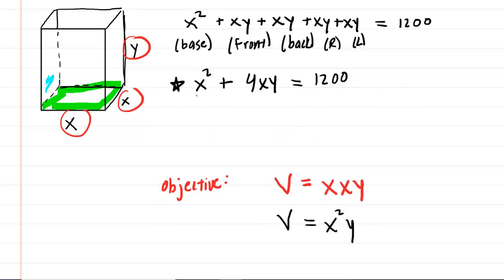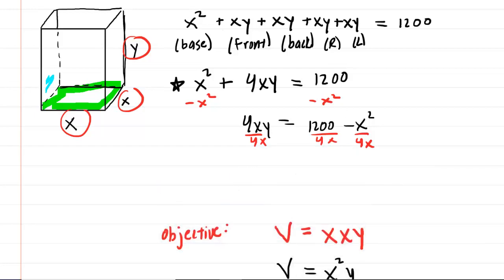And to do that, I'm going to subtract X squared from both sides. So that would give me 4XY is equal to 1200 minus X squared. And then to solve for Y, I'll divide each term by 4X. So Y is equal to 1200 divided by 4, which is 300.